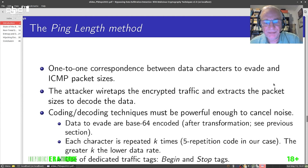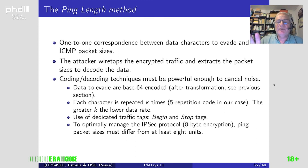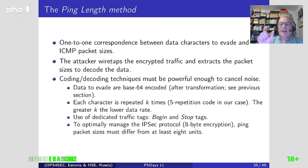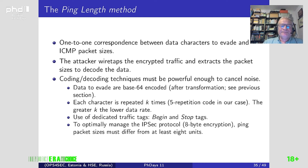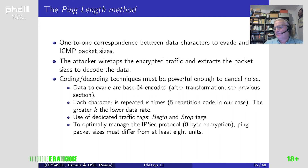Each character to exfiltrate is encoded by a specific packet size. To be able to extract the data, we use a five-repetition code — we repeat every character five times. We use dedicated traffic tags such as begin and stop markers, and we have implemented other optimizations to increase decoding capability. For example, a packet size of 32 bytes corresponds to a specific character, and so on.